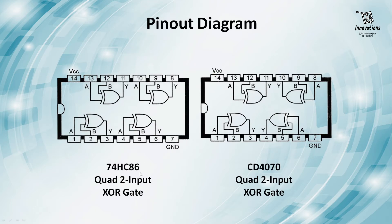Looking at the pinout diagram: for the 7486 IC, the first segment has input pins 1 and 2, output pin 3; second segment input pins 4 and 5, output pin 6; third segment input pins 9 and 10, output pin 8; fourth segment input pins 12 and 13, output pin 11. Pin 14 is the positive power supply pin and pin 7 is the negative power supply pin.